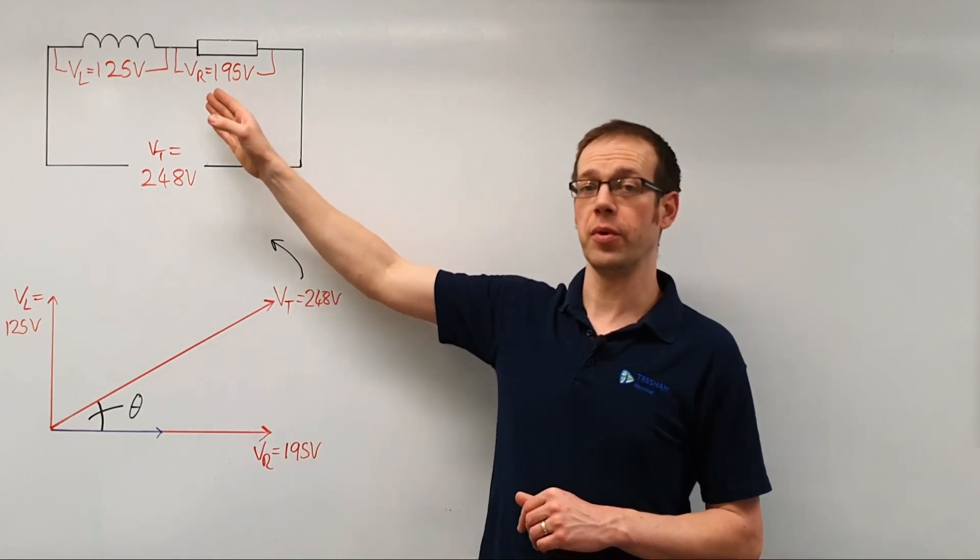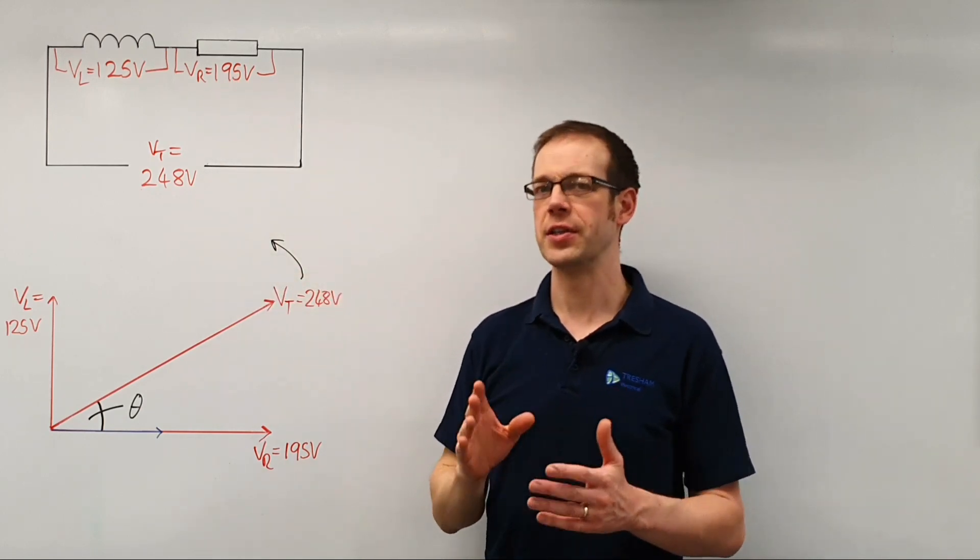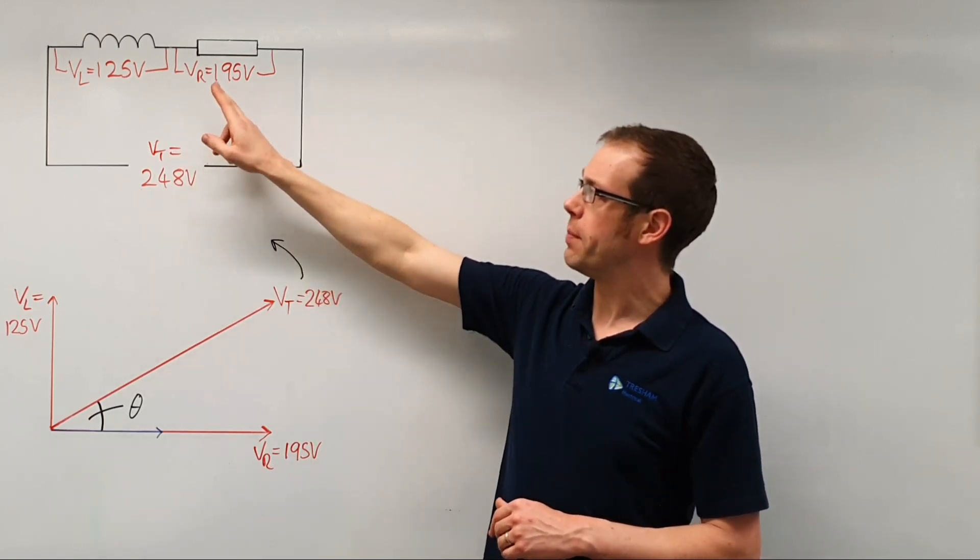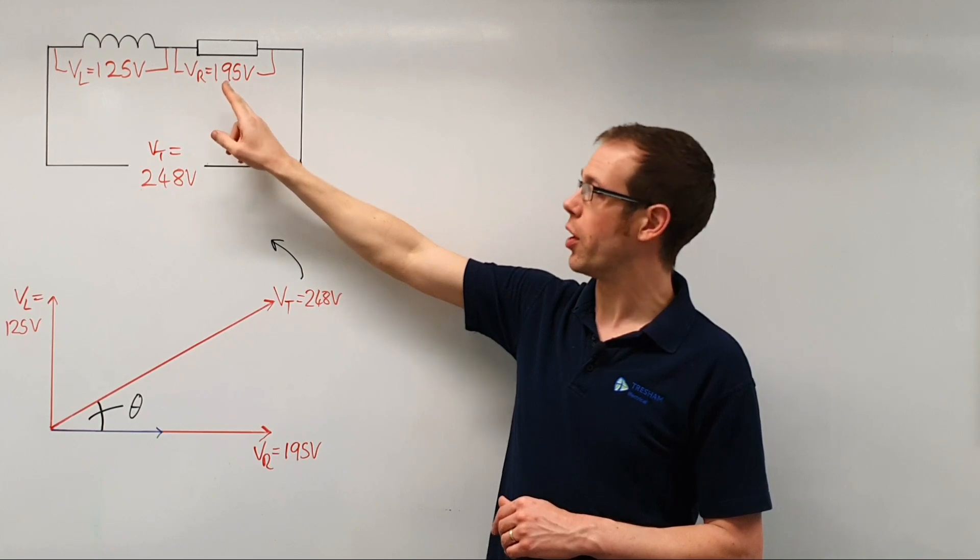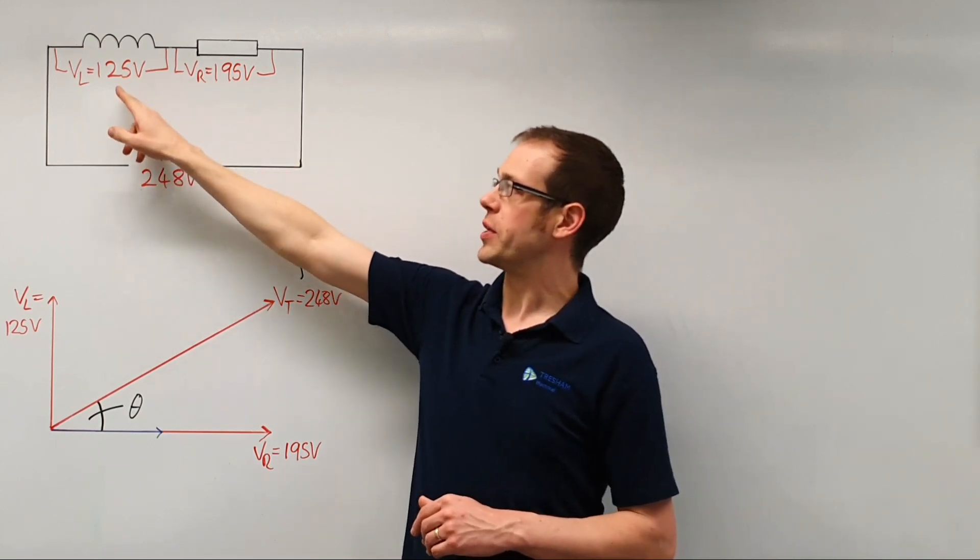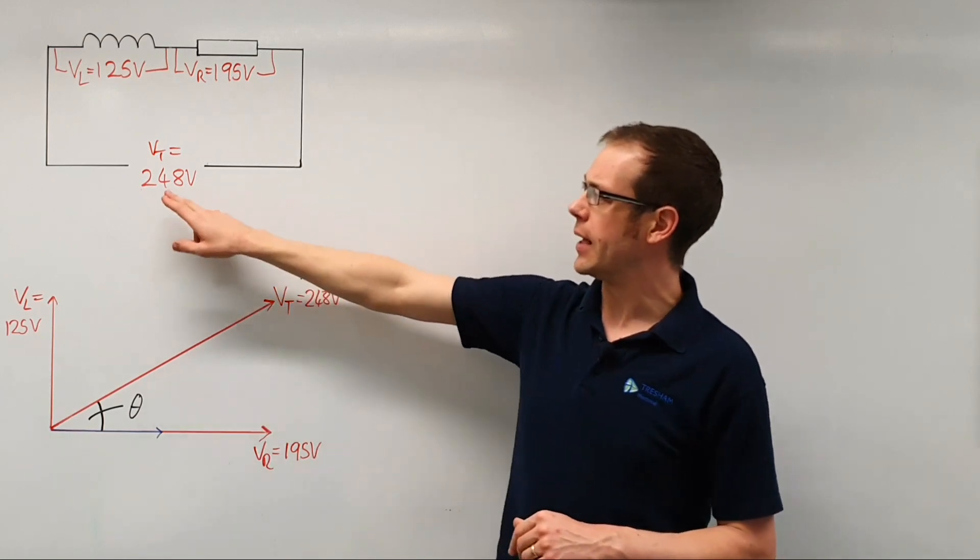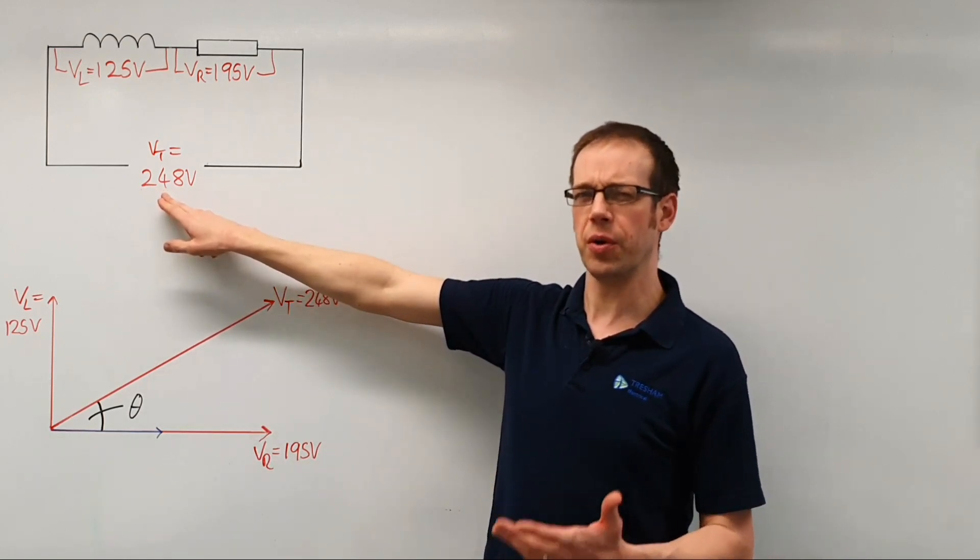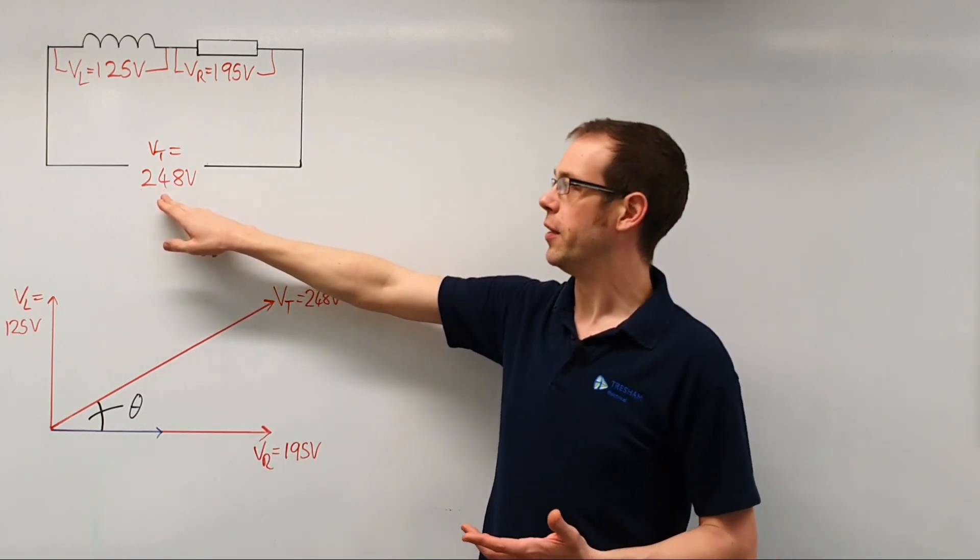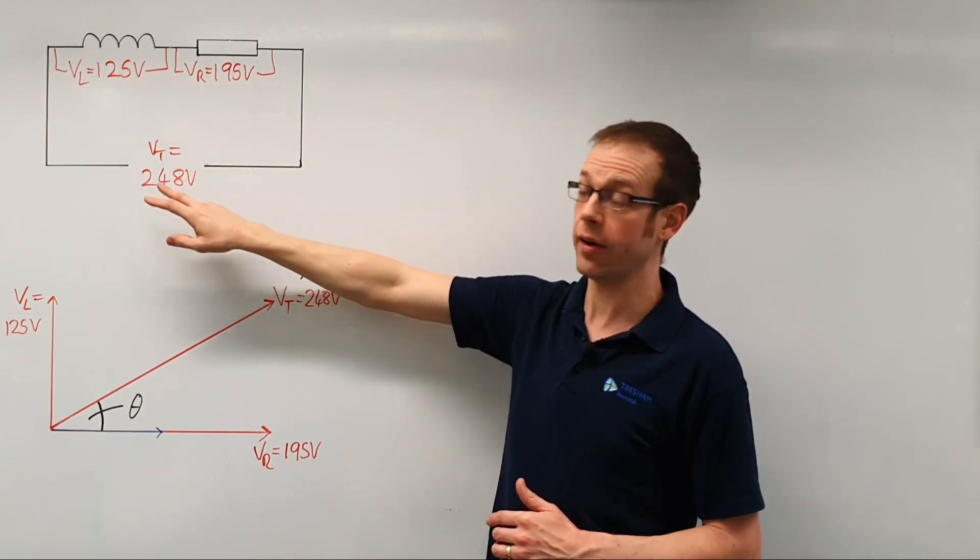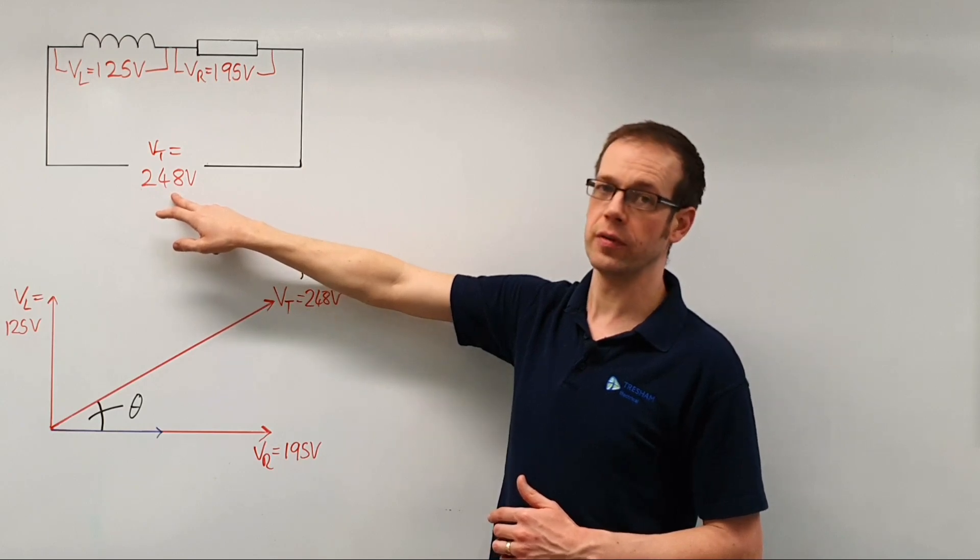The values shown on the board here were taken from our experiment with the fluorescent lamp. When we measured the voltage across the resistor we got 195 volts. When we measured the voltage across the inductor we got 125 volts, and yet the total voltage in the circuit was 248 volts. Now we know from very basic circuit theory that the voltages inside a series circuit should add up to give us our total voltage.